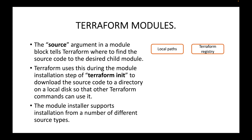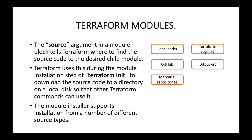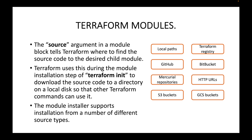The supported source types include: local paths, Terraform Registry, GitHub, Bitbucket, Mercurial repositories, HTTP URLs, S3 buckets, Google Cloud buckets, and modules in package sub-directories. These are all the options available for the source argument, allowing you to store and download source code within your module block.